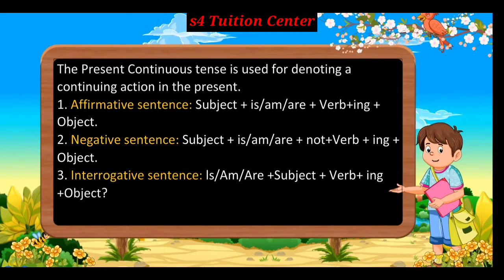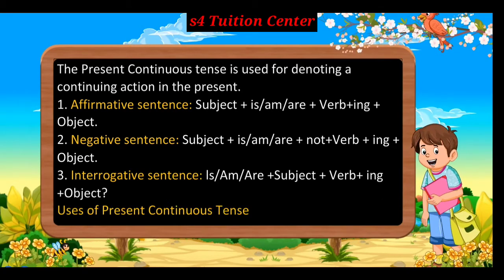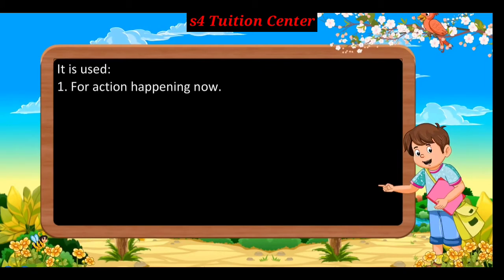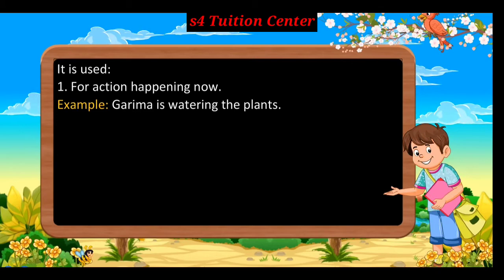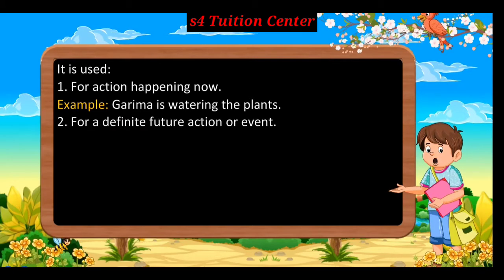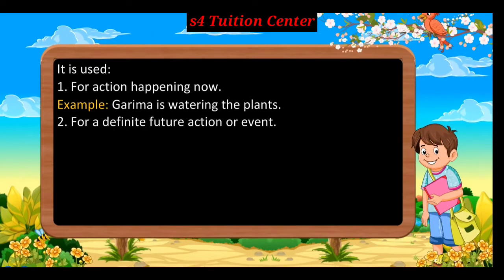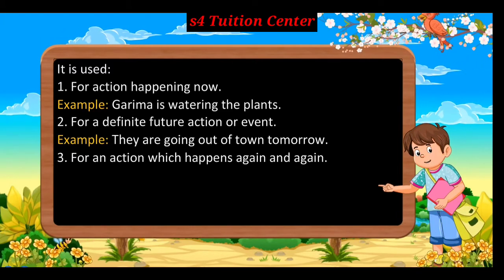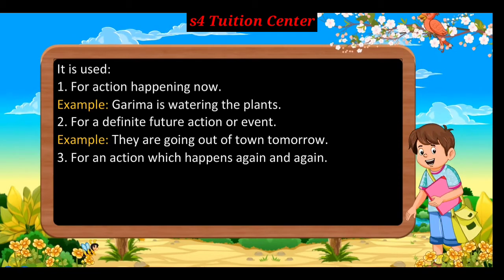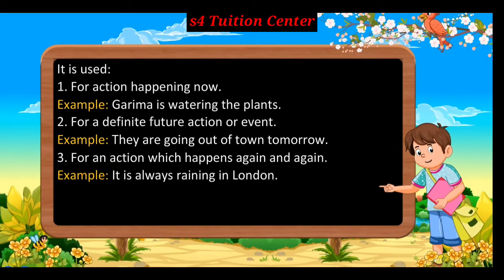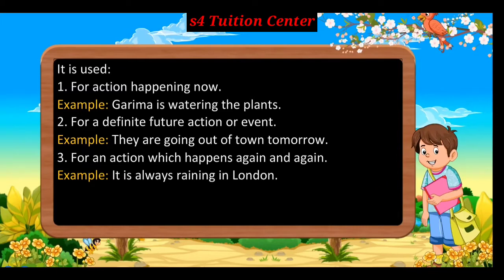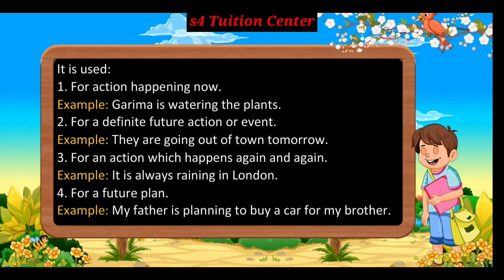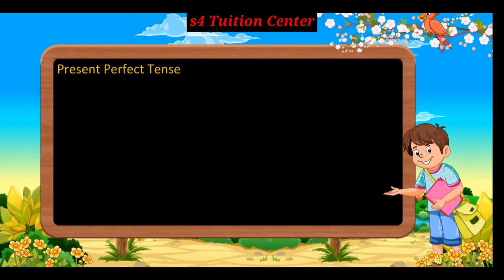Third, interrogative sentence: is/am/are + subject + verb + ing + object + question mark. Uses of Present Continuous Tense — first, for action happening now, e.g., Garima is watering the plants; second, for a definite future action or event, e.g., they are going out of town tomorrow; third, for an action which happens again and again, e.g., it is always raining in London; fourth, for a future plan, e.g., my father is planning to buy a car for my brother.